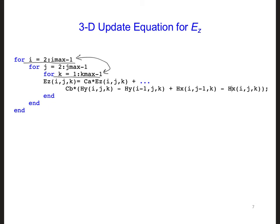In place of i here, I put in 2 to imax minus 1, which is the range of i's. And in place of j, similarly, I put in 2 to jmax minus 1, and so forth.